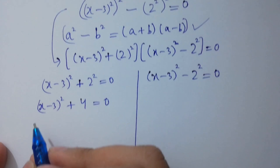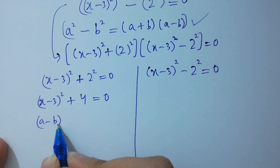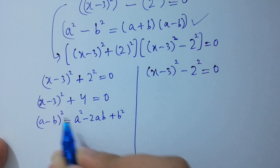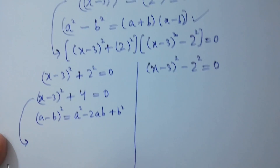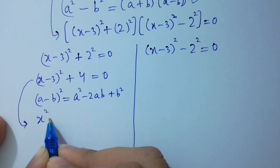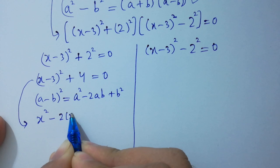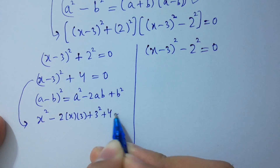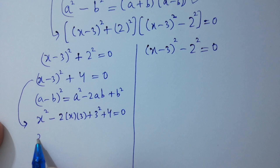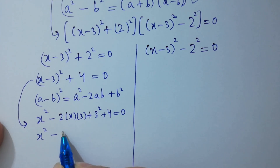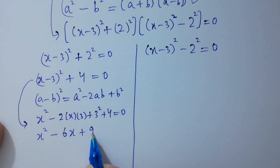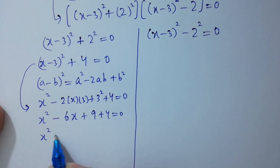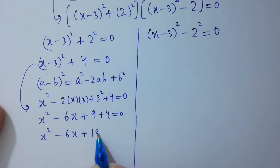Use the formula (a minus b)^2 equals a^2 minus 2ab plus b^2. Expanding: x^2 minus 2 times 3 times x plus 3^2 plus 4 equals 0, giving x^2 minus 6x plus 9 plus 4 equals 0. We have the quadratic equation x^2 minus 6x plus 13 equals 0.